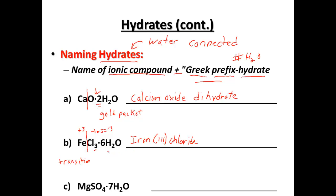So we have iron(III) chloride. The second part is we have six waters attached. Six in the Greek prefix is 'hexa,' and then to attach the water: 'hydrate.' So what we have here is iron(III) chloride hexahydrate.